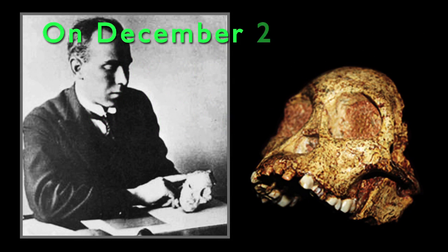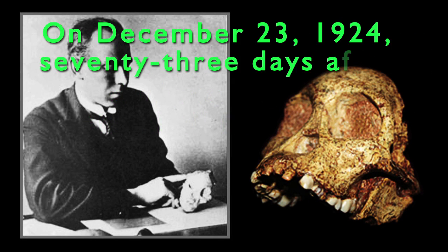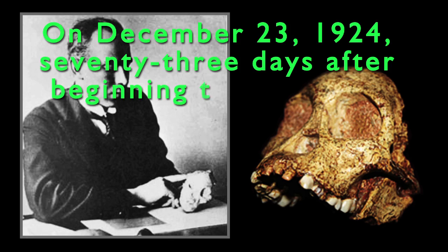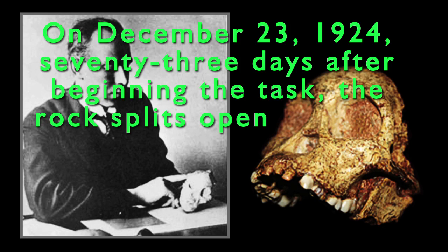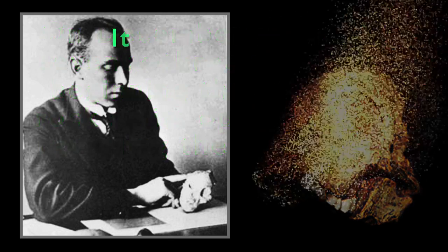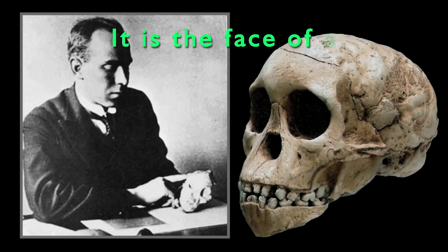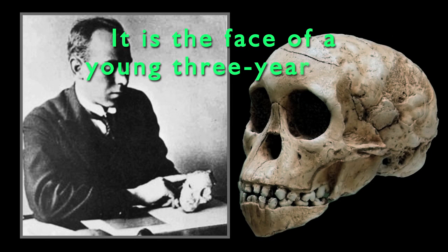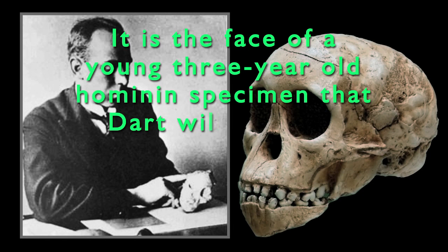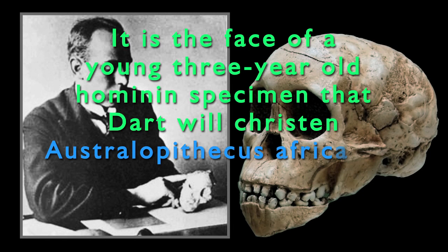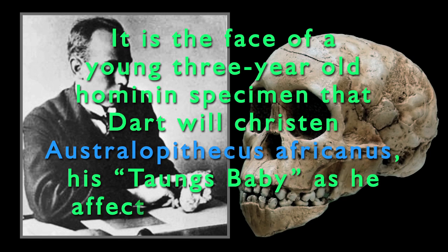On December 23, 1924, 73 days after beginning the task, the rock splits open, partially revealing the skull face. It is the face of a young three-year-old hominid specimen that Dart will christen Australopithecus africanus — his Taung's baby, as he affectionately called it.